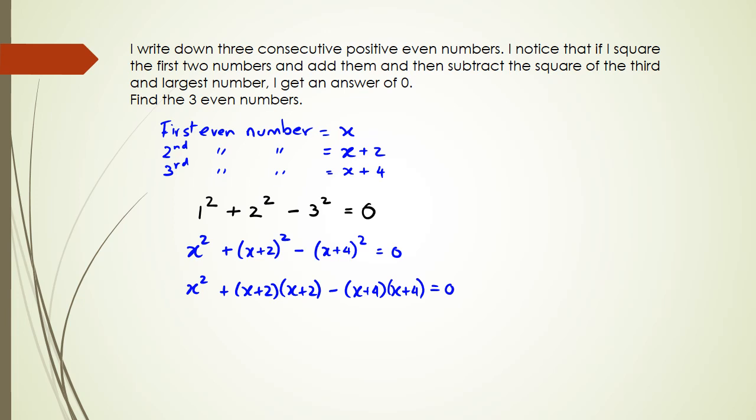Now, what I'm going to do is put this x plus four squared in another bracket, because remember, that minus actually affects all of the terms inside the light blue bracket. So expanding this, I get x squared plus x squared plus two x plus two x plus four minus, I'm going to put a blue bracket again. Inside the bracket, I've got x squared plus four x plus four x plus 16, and that's now equal to zero.